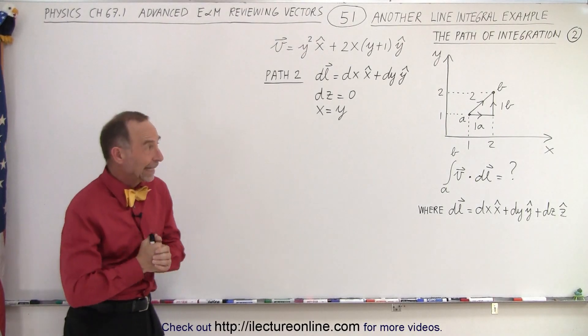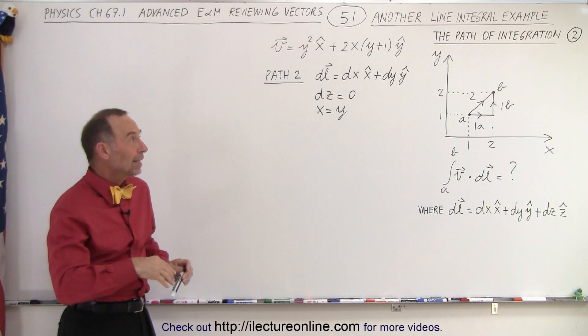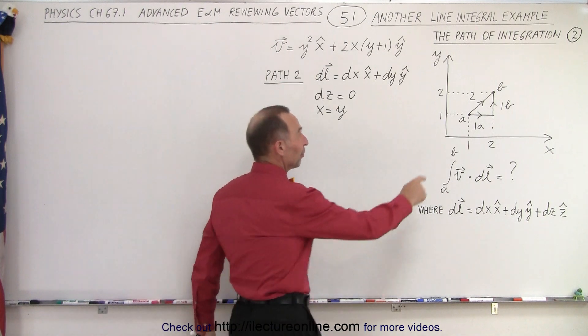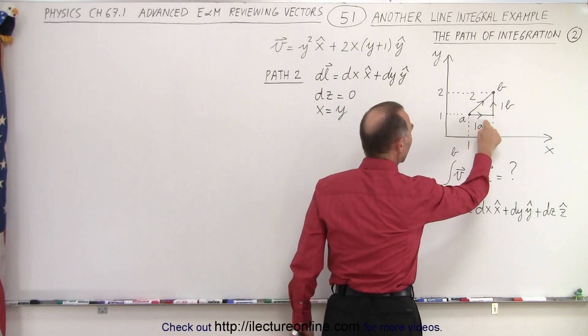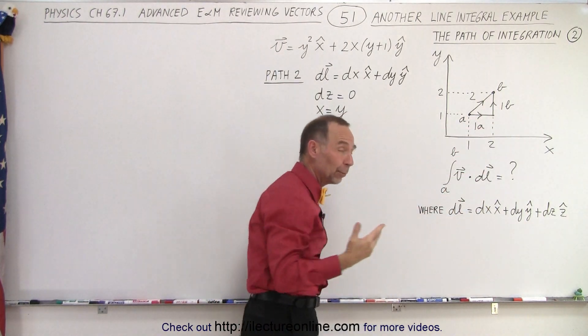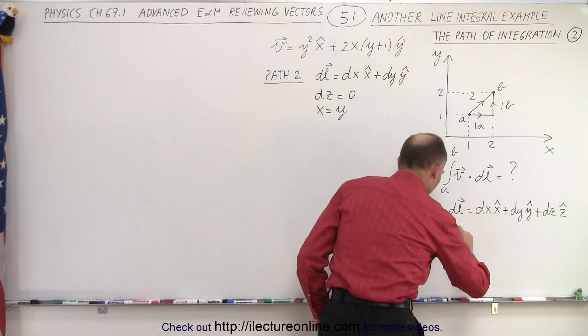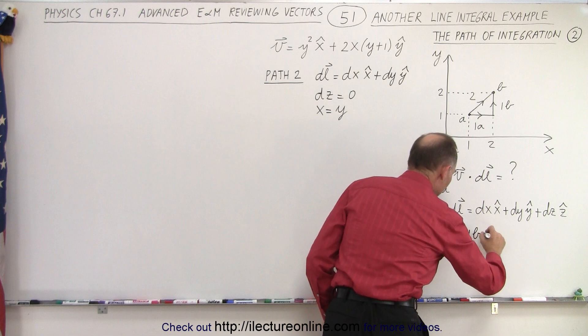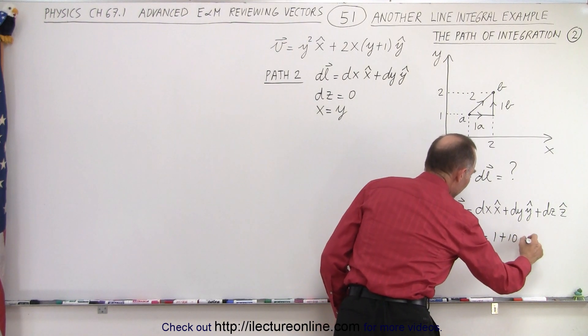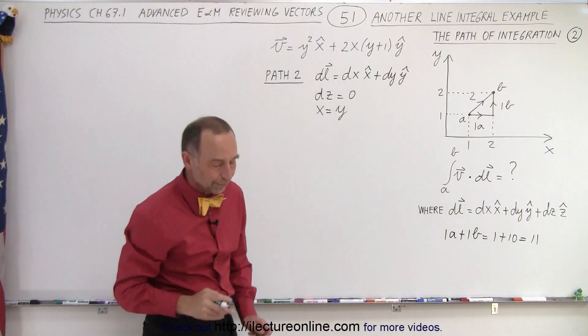Welcome to our lecture on line integrals. In the previous video, we did the line integral from A to B along the path 1A and 1B. The result that we got was that it was equal to 11. So we'll write that here: 1A plus 1B equals 1 plus 10 equals 11.